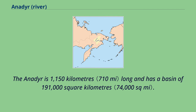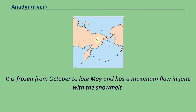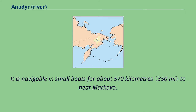The Anadyr is 1,150 km long and has a basin of 191,000 km². It is frozen from October to late May and has a maximum flow in June with the snowmelt. It is navigable in small boats for about 570 km to near Markovo.